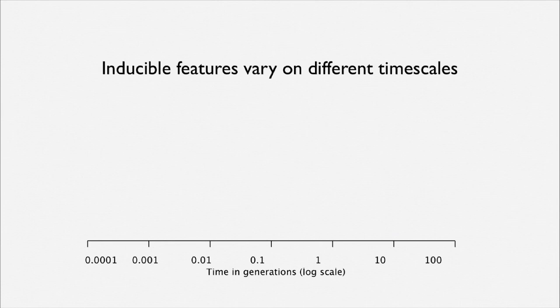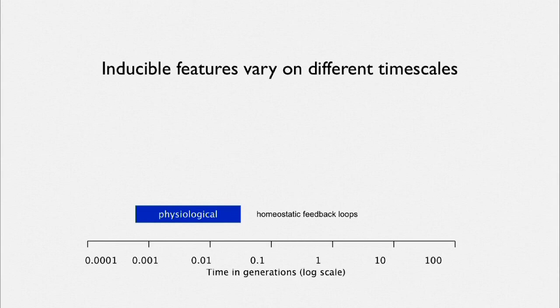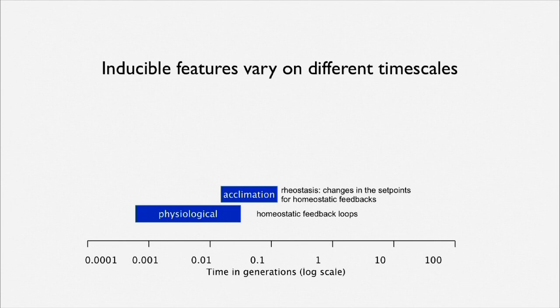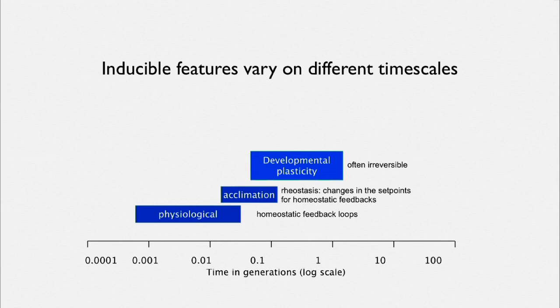Thinking about the timescales on which these things operate: homeostatic feedback loops are physiological, operating at a tiny fraction of a percent of generation time. Acclimation operates at roughly a tenth to a quarter of a generation. Part of acclimation is rheostasis — a rheostatic mechanism resets controls and causes changes in set points on homeostatic controls. Developmental plasticity is often irreversible and usually operates at the scale of a full generation.